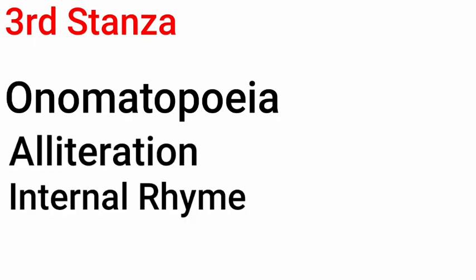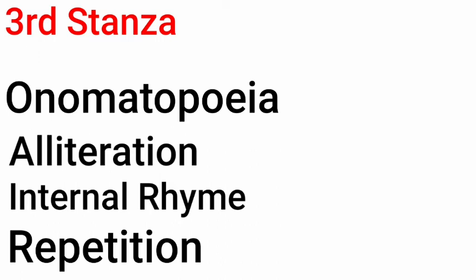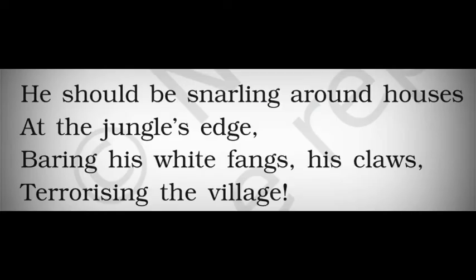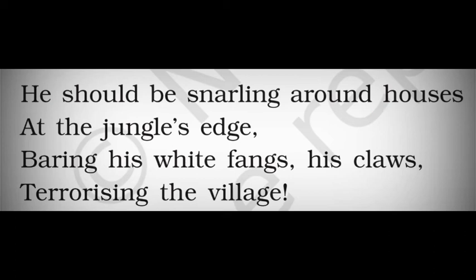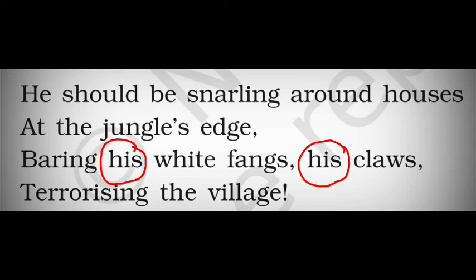In stanza three, onomatopoeia, alliteration, internal rhyme, and repetition are used. Onomatopoeia: the word 'snarling' itself suggests the growling sound of the tiger. Alliteration: 'he' and 'houses' — the H sound is repeated. Internal rhyme: again 'he' and 'be' are rhyming. Repetition: 'bearing his white fangs, his claws' — the word 'his' is repeated twice.